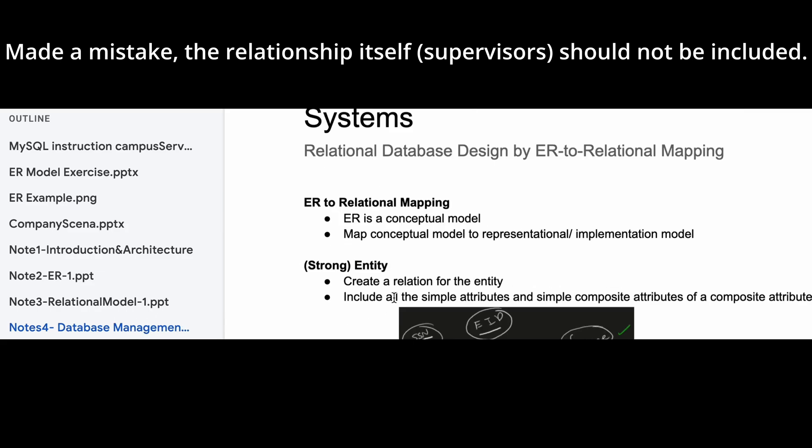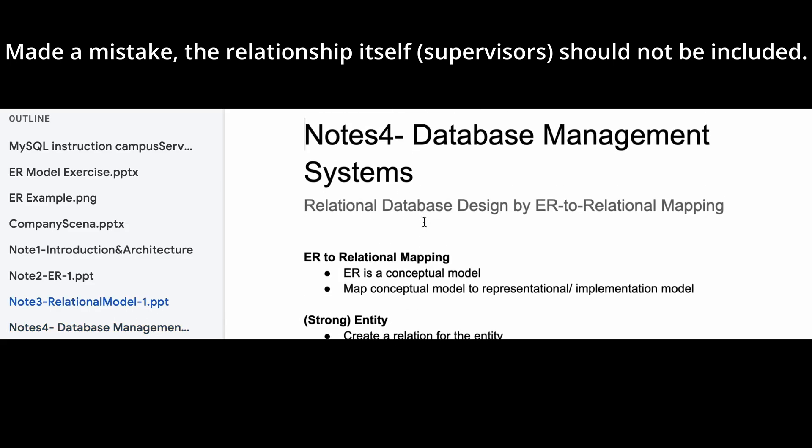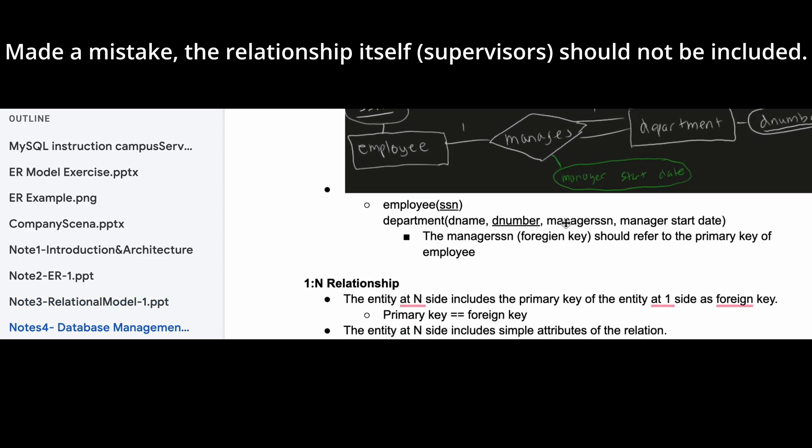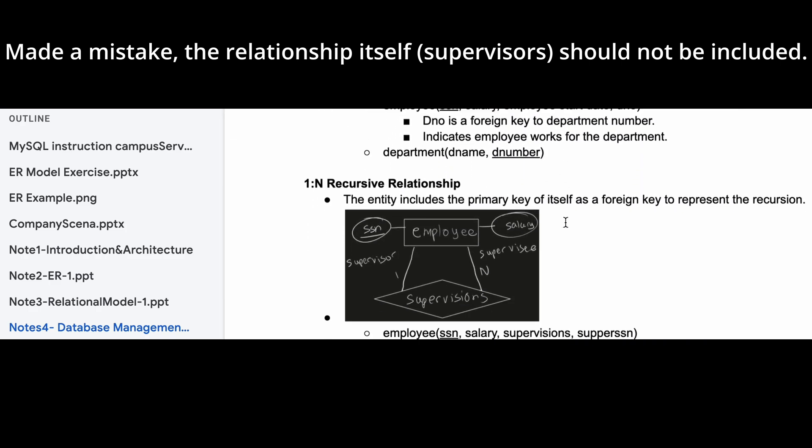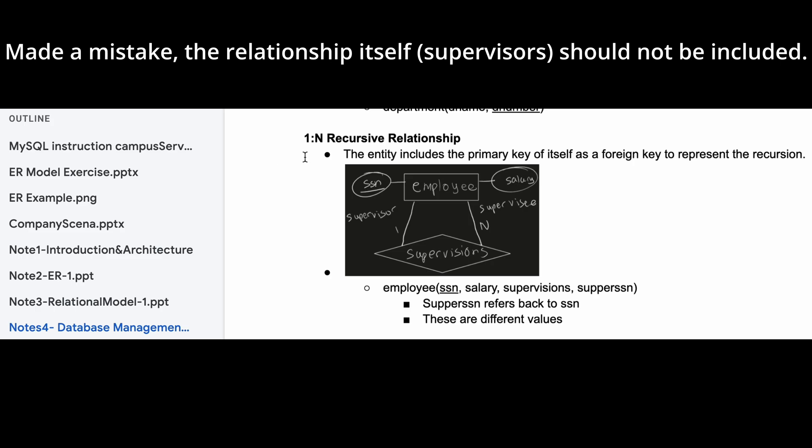We are in our section with database management systems where we take relational database design and put it into an ER to relational mapping. We've looked at one-to-many and one-to-one relationships - those can be found in the playlist link below the like button. But now we're looking at a one-to-many recursive relationship.